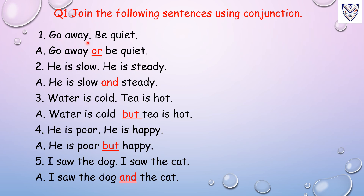Number 2: He is slow. He is steady. Answer: He is slow and steady. Here 'and' is a conjunction. 'He' is a common word in both sentences, so we are not writing it again.